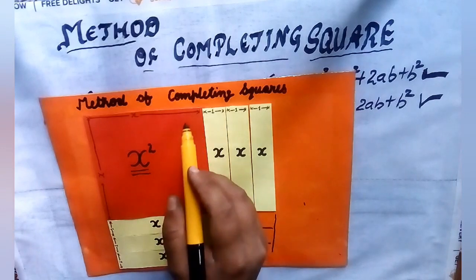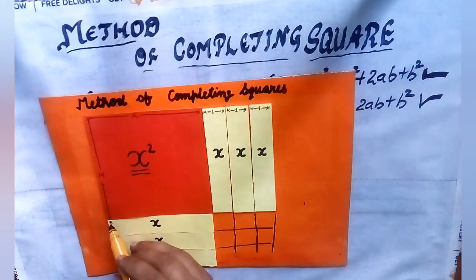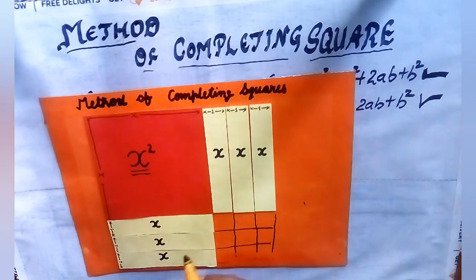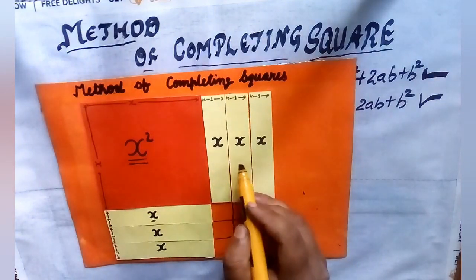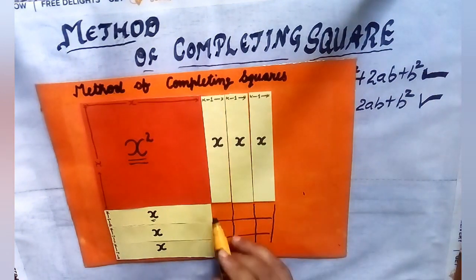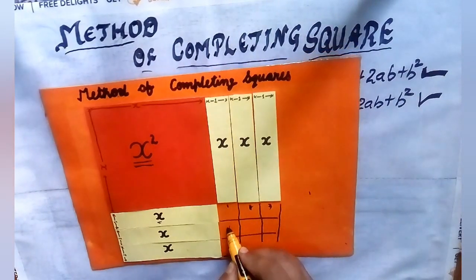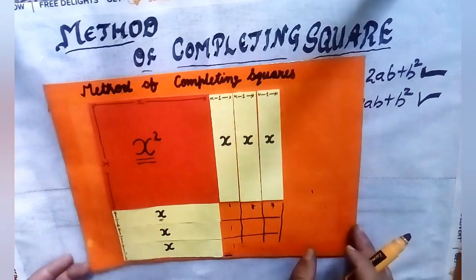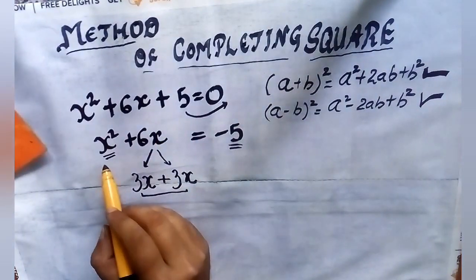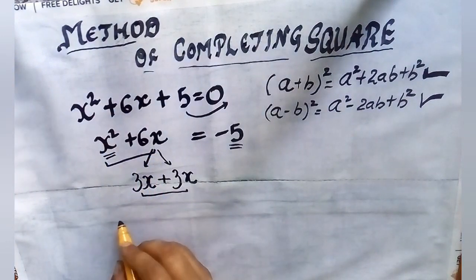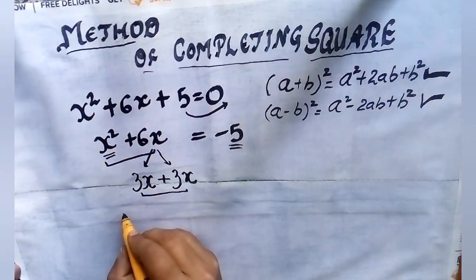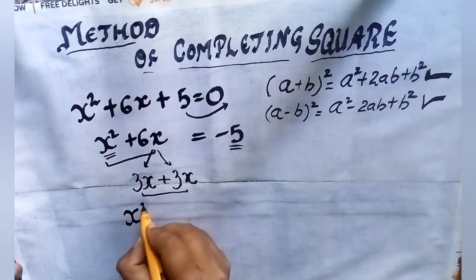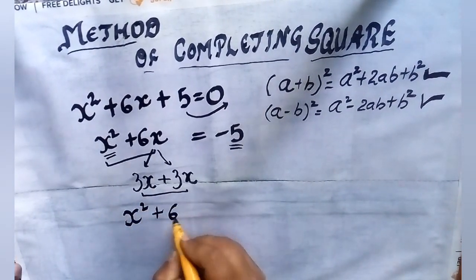Here I took 6 rectangles with length equal to 1 unit and breadth equal to x unit, and their area is x × 1 = x. I pasted 3 horizontally and 3 vertically with the sides of the square. Now what I require to complete the square — you can see I require a square with side 3 units, and its area will be 3² = 9. So let us add 9 to both sides of our equation.